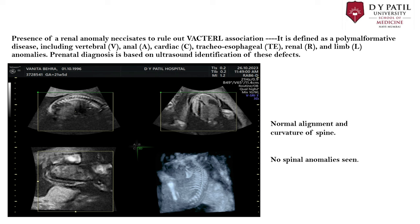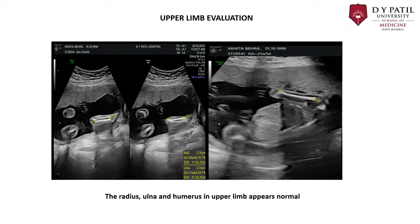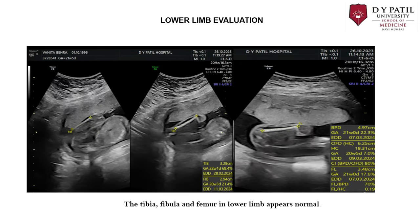Renal anomalies may be part of VACTERL syndrome, which needs to be ruled out. VACTERL syndrome consists of vertebral, anal, cardiac, tracheoesophageal, renal, and limb anomalies, with prenatal diagnosis based on ultrasound identification of these defects. The vertebral body shows normal alignment and curvature with no spinal anomaly seen. Upper limb evaluation shows radius and ulna; lower limb evaluation shows tibia and femur. All limbs are present and show normal length.